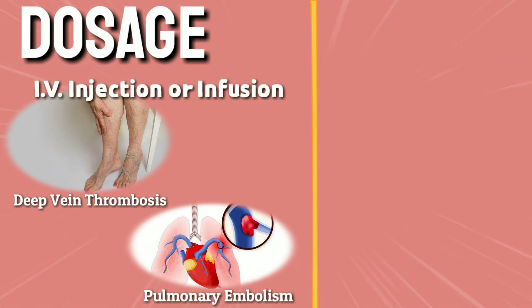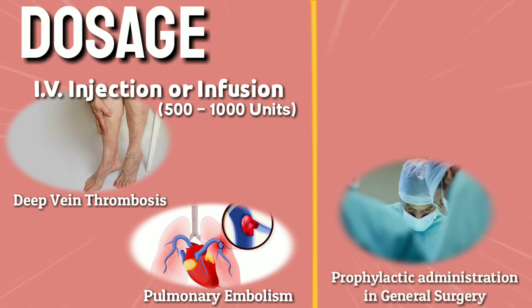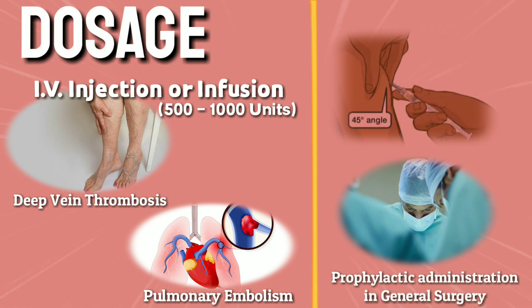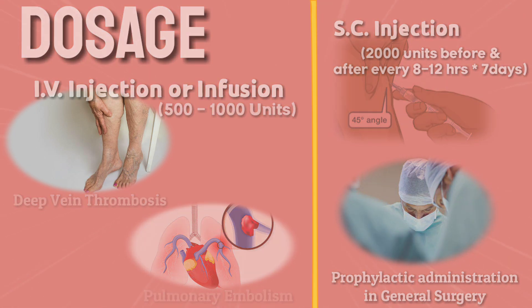Adult loading dose is 5,000 units, while in severe embolism 10,000 units. For prophylaxis in general surgery by subcutaneous injection: 2,000 units before surgery and then every 8 to 12 hours for 7 days.